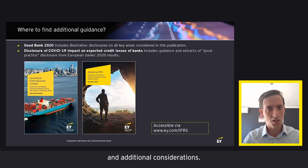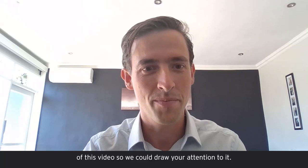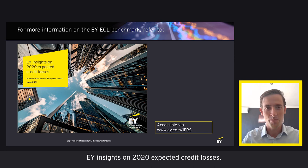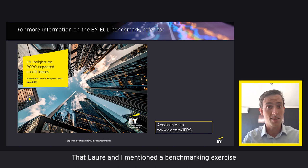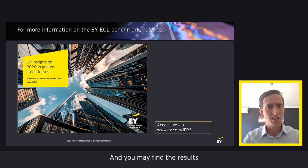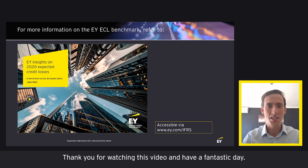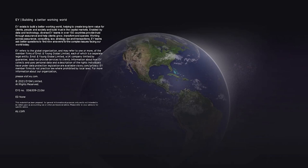Finally, and considered so important that the last minutes of this video were re-filmed to highlight it: EY Insights on 2020 Expected Credit Losses. This publication summarises the results of a benchmarking exercise that looked at the published ECL data of 18 large banking institutions headquartered in Europe. The results and information may be informative and thought-provoking as you look forward to the 2021 reporting cycle. All three publications are available at www.ey.com/IFRS. Thank you for watching and have a fantastic day.